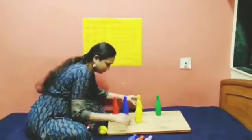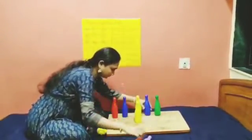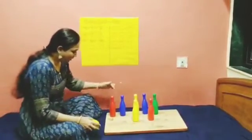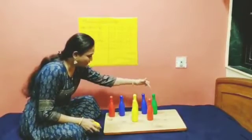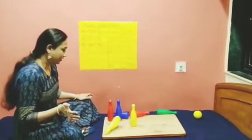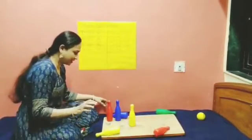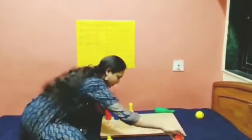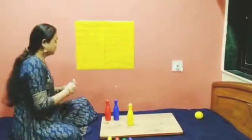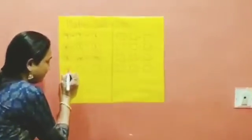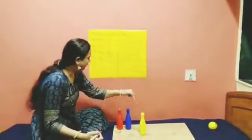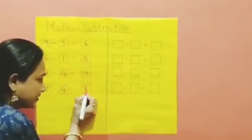Now how many bottles are there? 1, 2, 3, 4, 5, 6, 7. So teacher is throwing the ball. And how many bottles fell down? 1, 2, 3, 4. So 7 bottles were there, 4 bottles fell down, and how many left? 1, 2, 3. 3 bottles left.